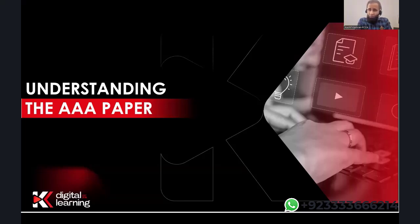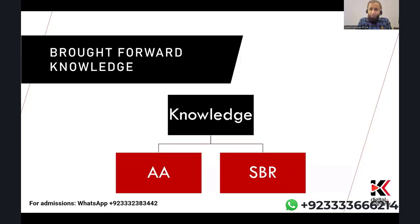Now let's open up the orientation for AAA with a quick understanding of the paper. First, in terms of brought-forward knowledge, there are two preceding exams that will help you in AAA: number one, AA, and number two, SPR. A lot of students ask me: if we are exempted from AA, can we still do AAA? My answer is yes.